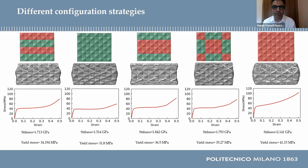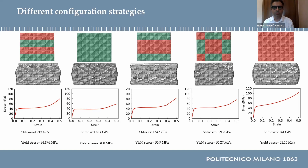Different configuration strategies — namely layer uniform base, reinforced middle layer, diagonal, and uniform reinforced — were implemented, and their stress-strain diagrams, stiffness, and yield stress were extracted. The results showed the impact of geometrical configurations on the mechanical properties of the models, while the ratio of base to reinforced unit cells seemed to have an overall effect.